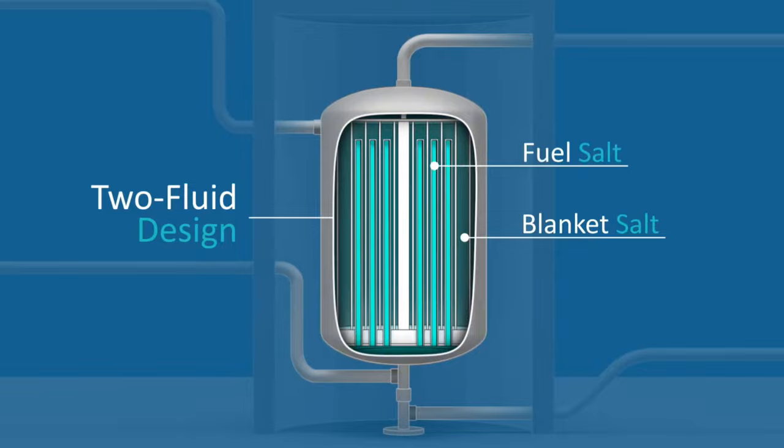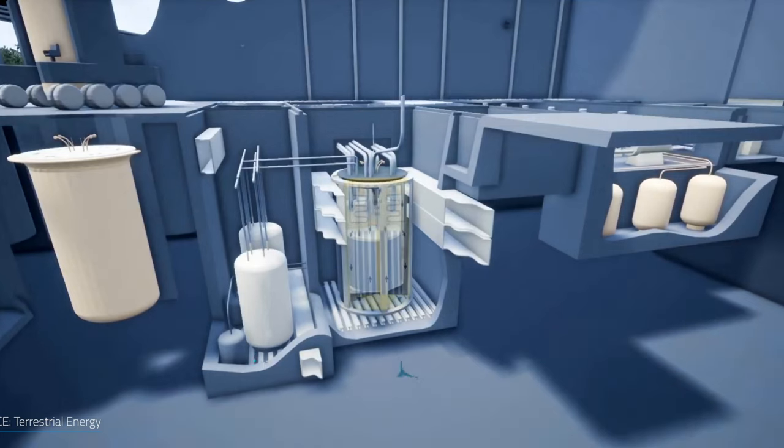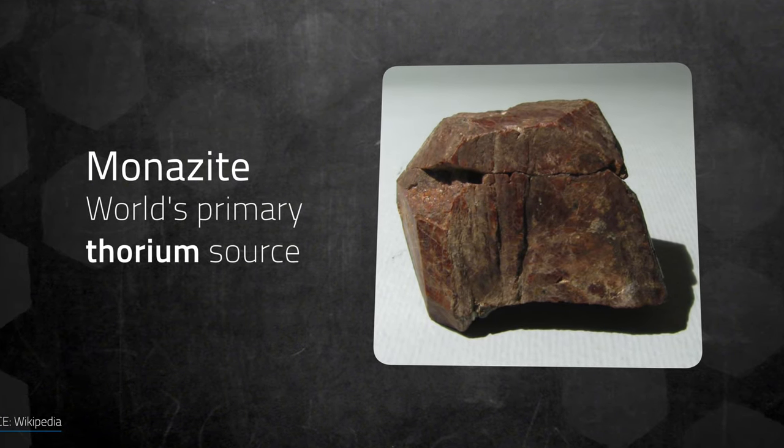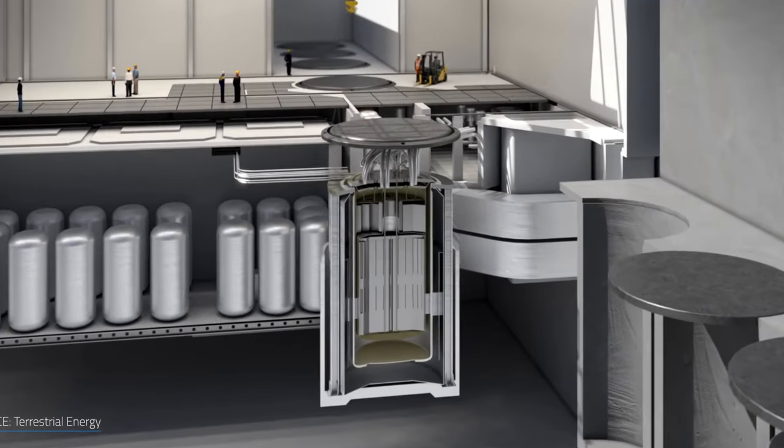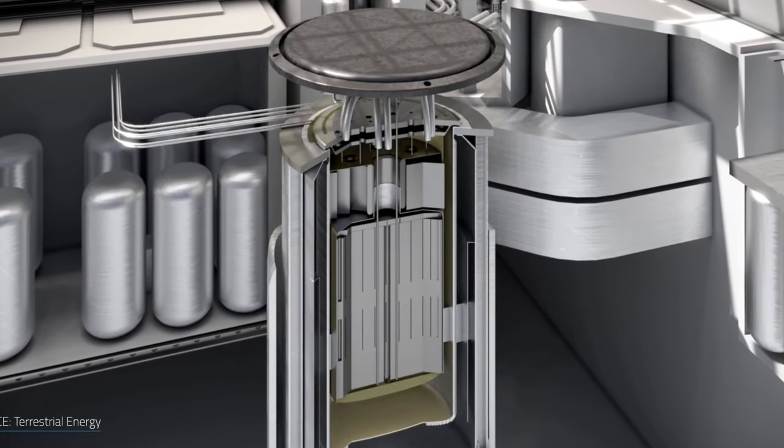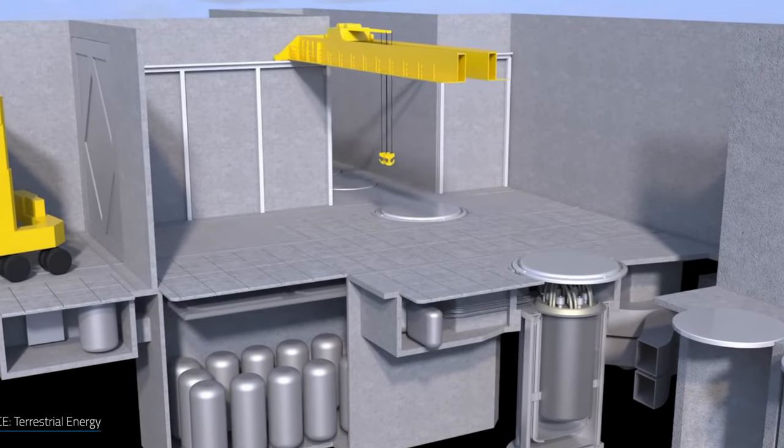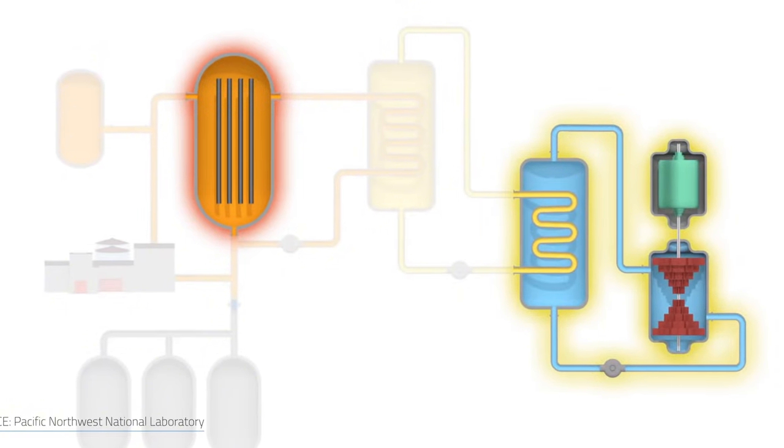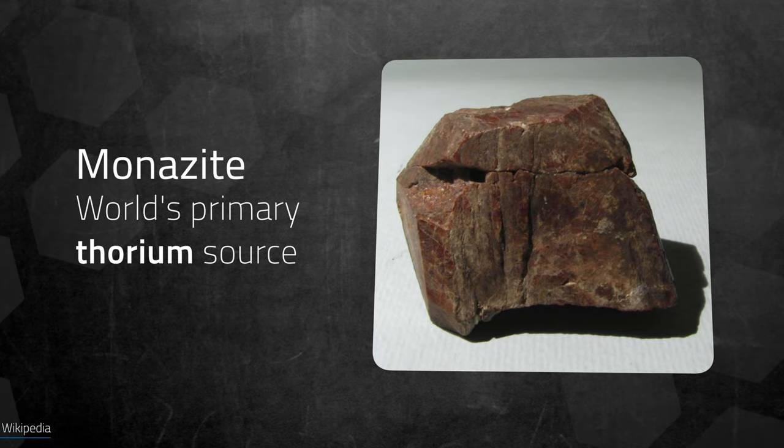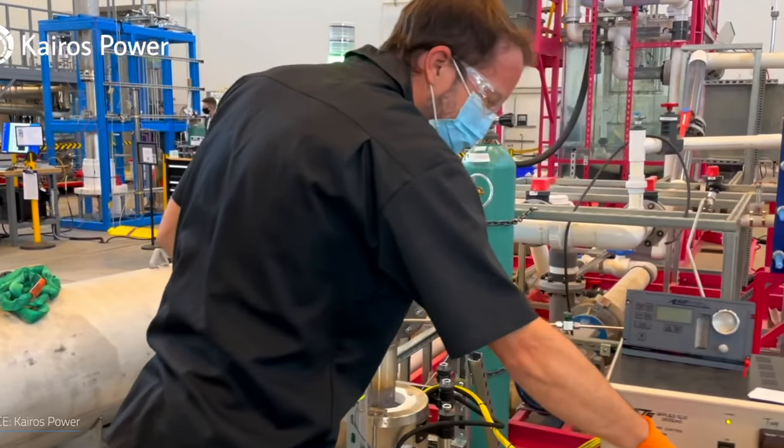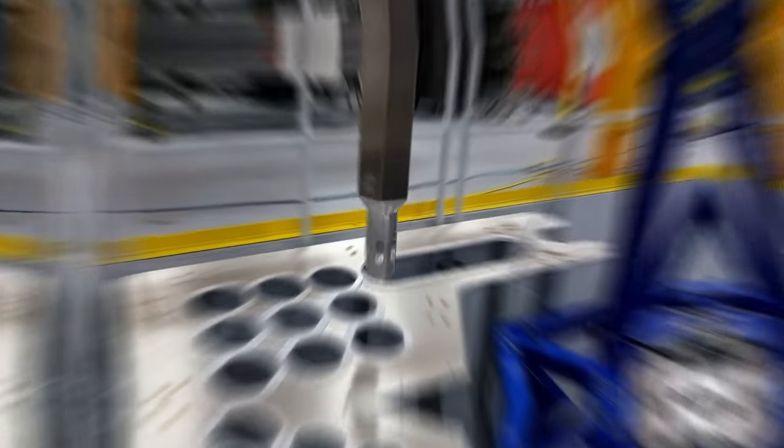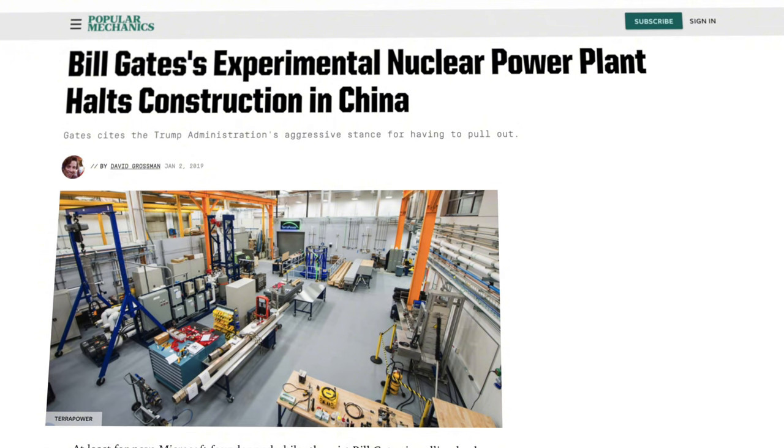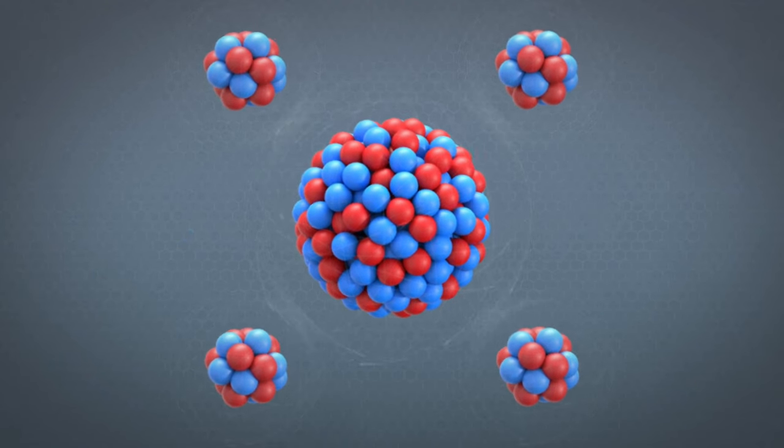Thorium is a chemical element with the symbol Th and atomic number 90. It is a silvery white metal that is slightly radioactive, but much less than uranium. Thorium is also more abundant than uranium, as it makes up about 0.6% of the Earth's crust, compared to 0.2% for uranium. This means that there is enough thorium in the world to provide electricity for 1500 years, even if we use it at the same rate as we use uranium today. Thorium is mostly found in a mineral called monazite, which also contains rare earth elements such as lanthanum, cerium, and neodymium. These elements are used for making magnets, batteries, and electronics, and they are in high demand for the green energy transition. Therefore, extracting thorium from monazite would also provide a valuable source of rare earth elements, which are currently dominated by China.